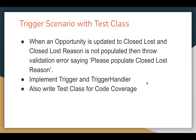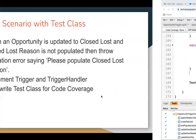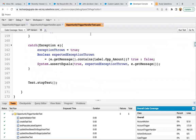We just need to check whether this field is available under the Opportunity object. If it is not available, we will first create the Closed Lost Reason field, then implement the trigger and trigger handler. Later, I will also demo how to implement its test class so that the code will be covered. Let's jump to the developer edition org.